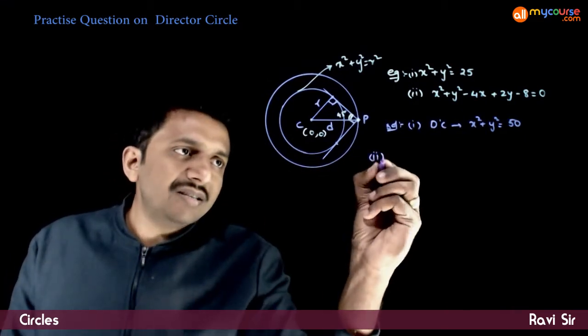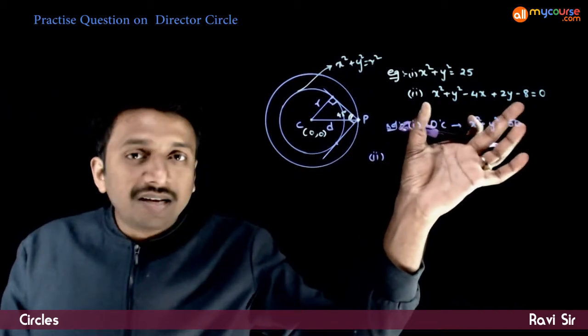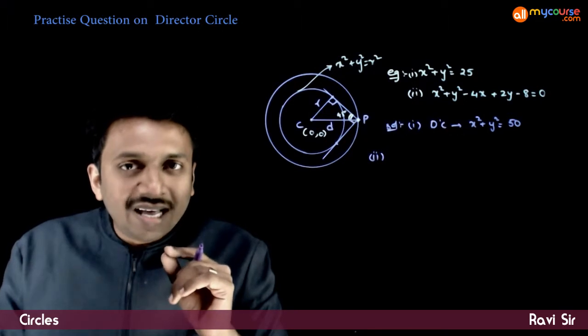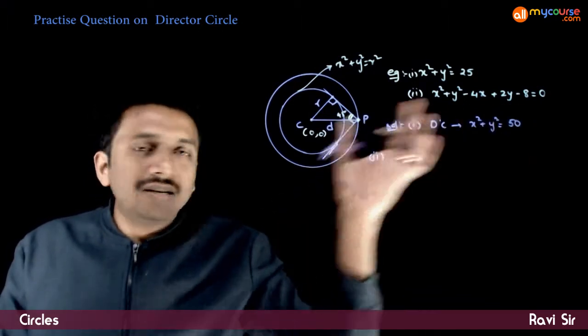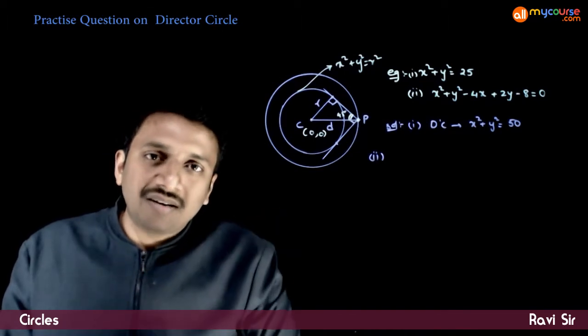The second question is slightly tricky. You are asked to find the director circle to this circle. We know that a director circle will be concentric to this circle. That is, both of them will have the same center.